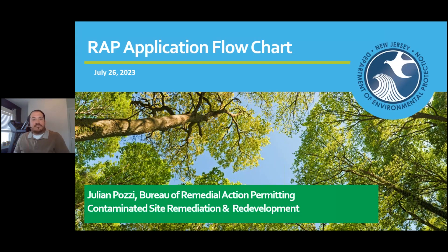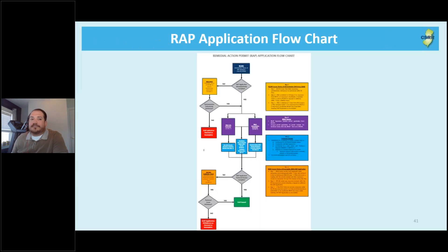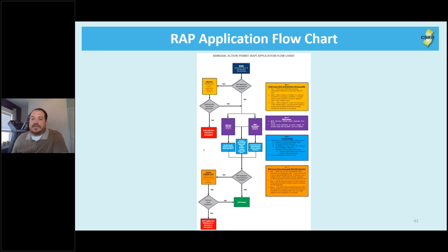I'm back — now I'm going to discuss the WRAP application flowchart we developed. This is the WRAP application flowchart found at the end of the document. It illustrates the department's review process of WRAP applications from start to finish, showing from when it first comes into the Bureau of Case Assignment and Initial Notice down to when the WRAP application is either issued or withdrawn.